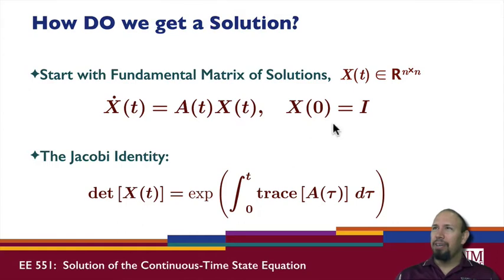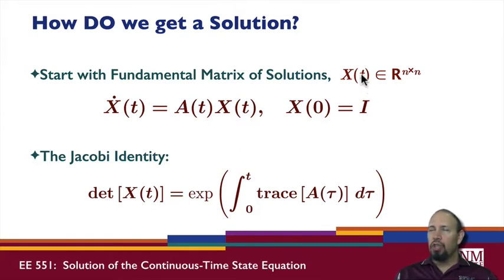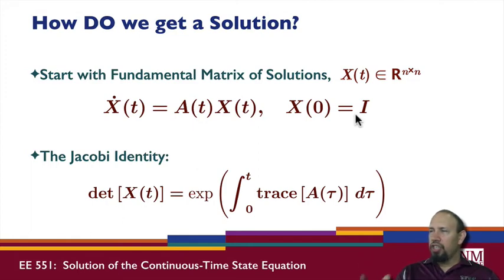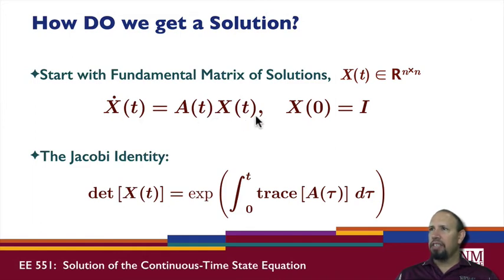So how do we obtain a solution? We start with a fundamental matrix of solutions — an n×n matrix where each column corresponds to a solution of the differential equation for a particular initial condition. The initial conditions are the columns of the identity matrix. We solve this differential equation for n initial conditions, each one being a column of the identity matrix. The resulting X(t) satisfies the differential equation.